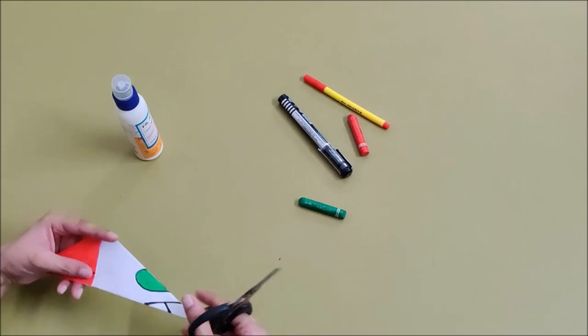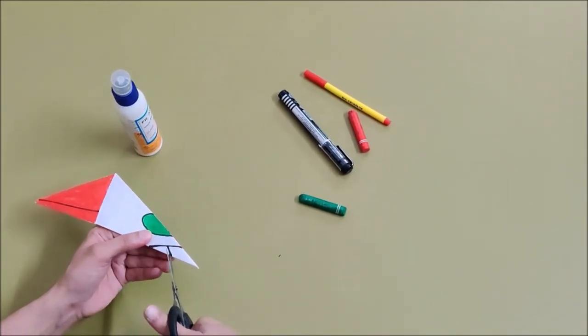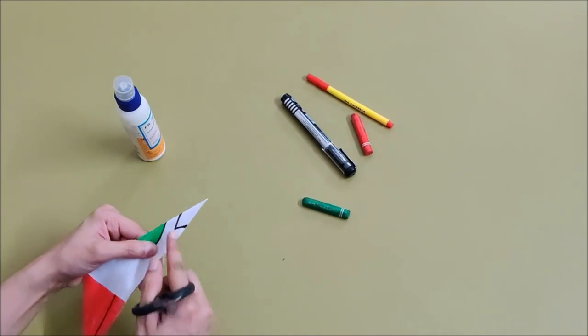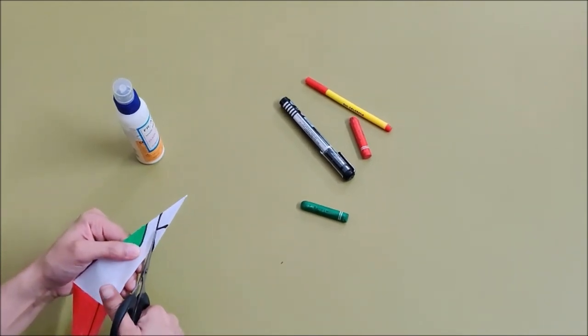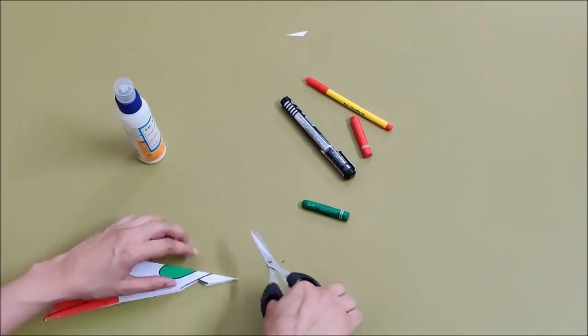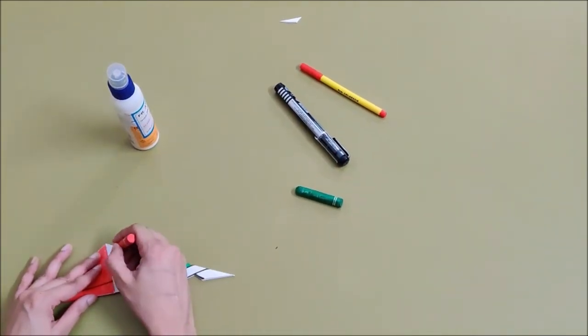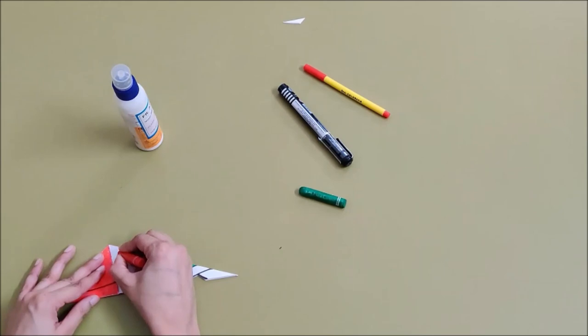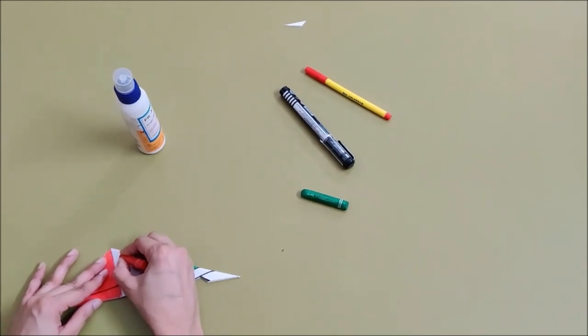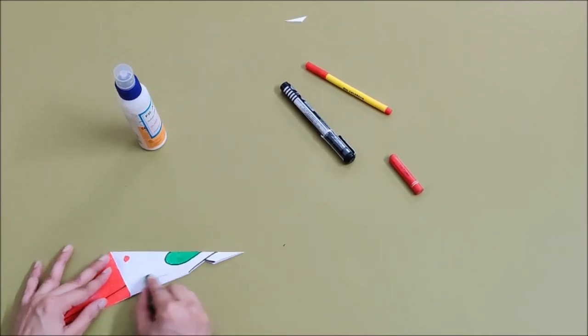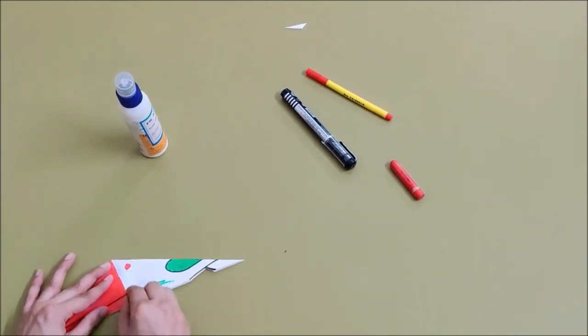Now you have to cut on this line, like this and on this one, just till here. And make parrot's eye. And what is the color of parrot? It is green in color. So color it green nicely.